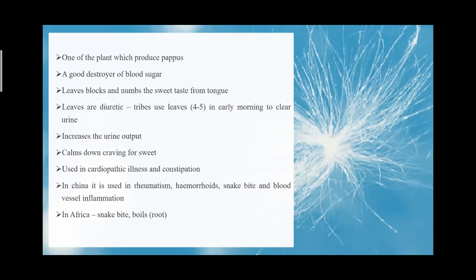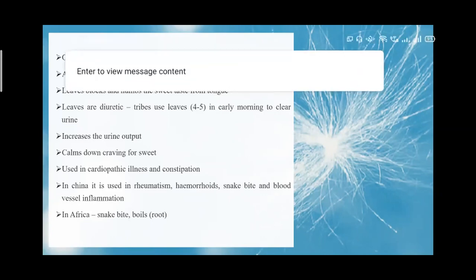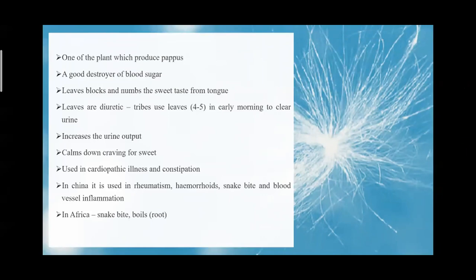The leaves are diuretic in nature. Some tribes take four to five leaves early in the morning to clear urine — useful since Prameha also affects the Mutravaha srotas. It is also told to be used in cardiopathic illness and constipation. In China, it is used for rheumatism, hemorrhoids, snake bite, and blood vessel inflammation, and in Africa for snake bite as well.